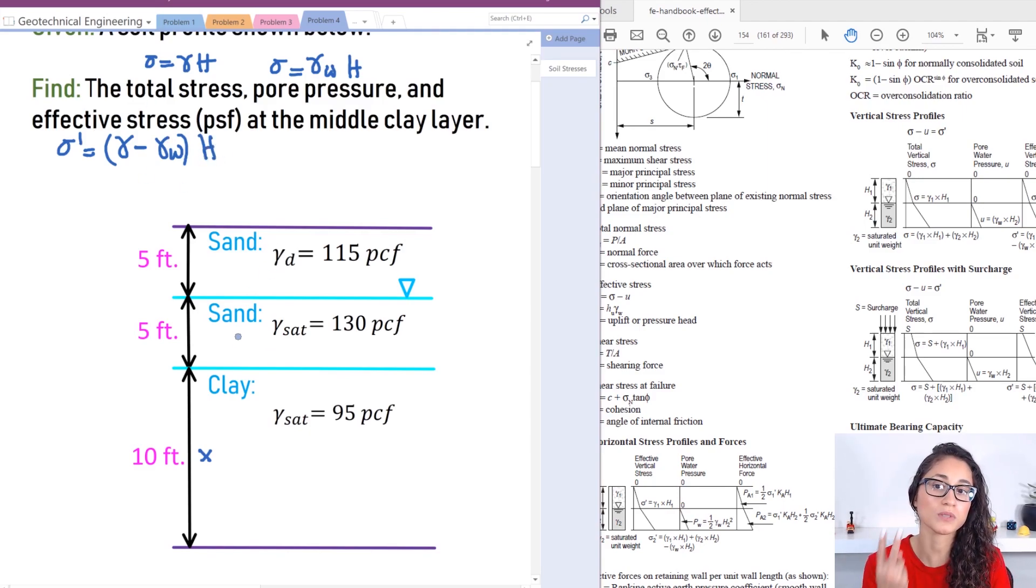So you can solve this problem in two ways. You can either solve the total stress, the water pressure, and then do total stress minus pore pressure that gives you the effective stress. Or you could calculate the effective stress, the pore pressure, and then you can add these two to get the total stress. Either way, you will get the same answer.